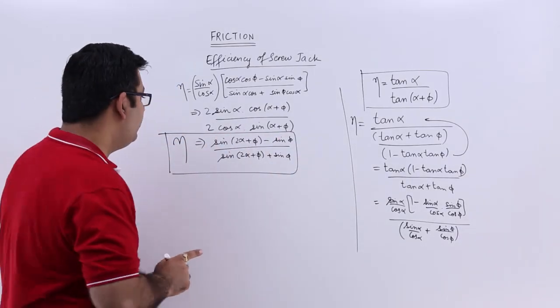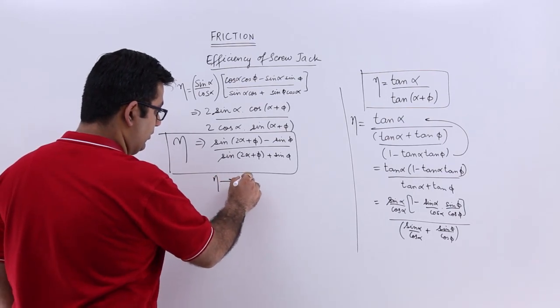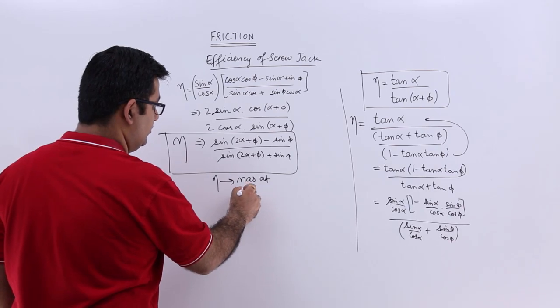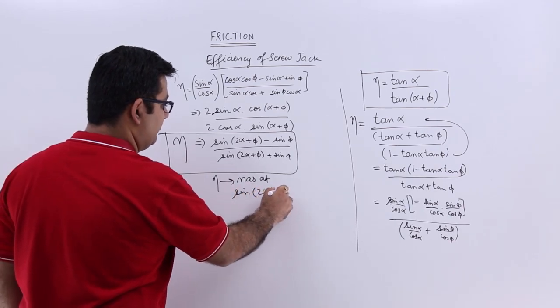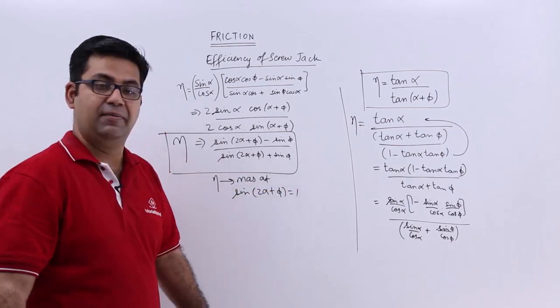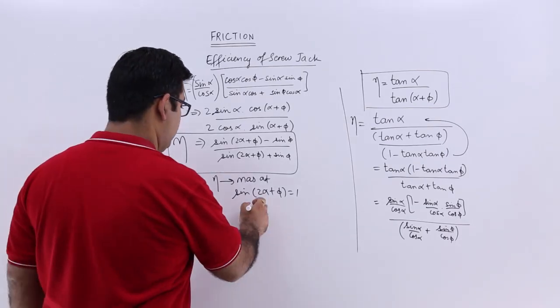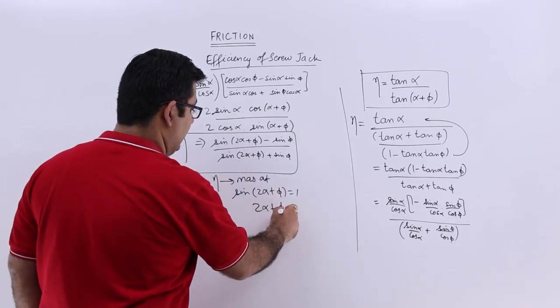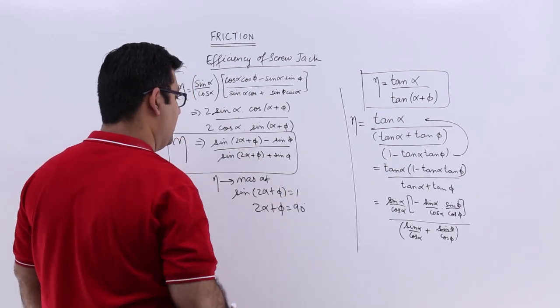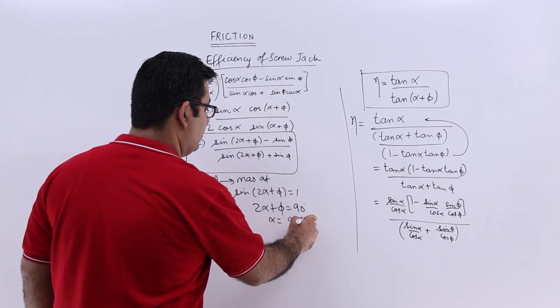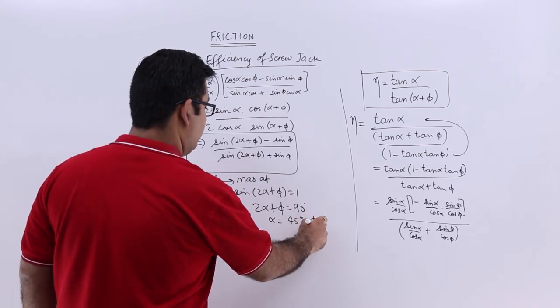Your eta would be maximum at sin of 2 alpha plus phi equal to 1, means this angle has to be a sum of 90 degrees. So 2 alpha plus phi is equal to 90 and alpha would be equal to 45 minus phi by 2.